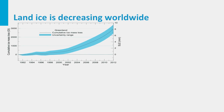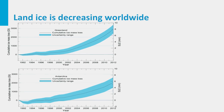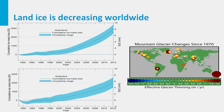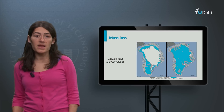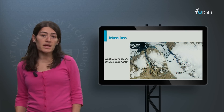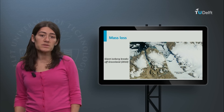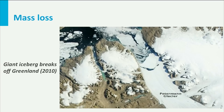When an ice body is in equilibrium, the gains from accumulation are balanced by the losses from ice discharge, runoff, and sublimation. At the moment, most glaciers and the two ice sheets are losing mass. The Greenland ice sheet is losing mass due to similar contributions of increased melt and higher velocities. The Antarctic ice sheet is losing mass only due to higher velocities.